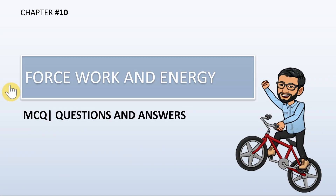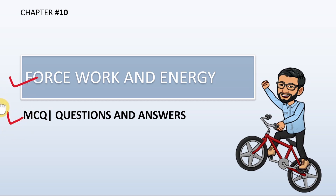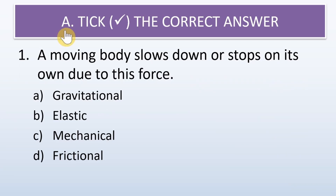Good morning students. Today we are going to learn question and answers of the chapter Force, Work and Energy. Let us immediately start. The first question is: take the correct answer. The first option is: a moving body slows down or stops on its own due to this force.